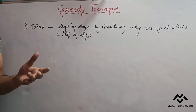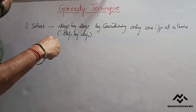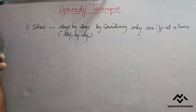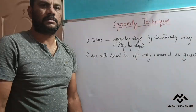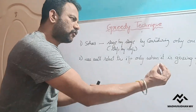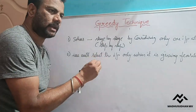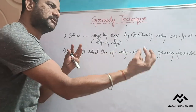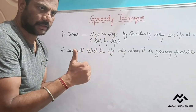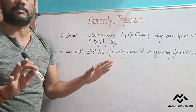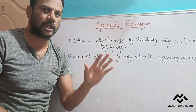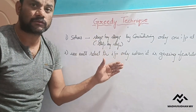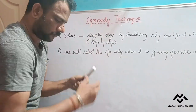Each step takes one input in such a way that we should get a feasible solution. If by selecting an input we are not getting a feasible solution, then we do not select it. We select the input only when including it gives us a feasible solution; otherwise we do not select that input.